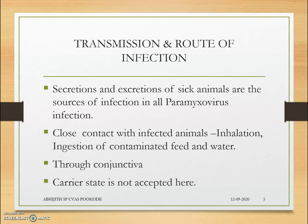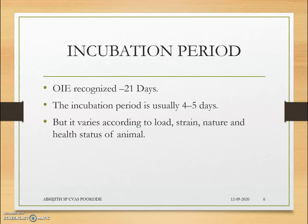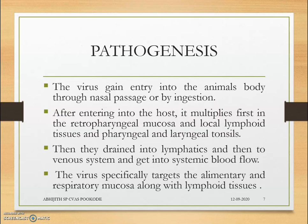All secretions and excretions of sick animals are the source of infection. Since it belongs to the Paramyxoviridae family, close contact with infected animals is required — transmission occurs by inhalation of droplets, ingestion of saliva, urine, or contaminated feed and water, or through the conjunctiva. There is no carrier state in PPR. The incubation period according to OIE is 21 days, but it depends on the viral load, strain, nature of virus, and health status of the animal. Normally, the incubation period is four to five days.